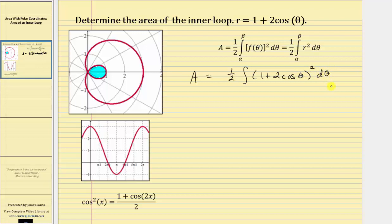Now let's work on determining the limits of integration that will trace out the inner loop. It's helpful to graph the polar equation on the rectangular coordinate system as shown here, where along the horizontal axis we have theta and along the vertical axis we have r. Notice at this point, r is three and theta is zero radians, which corresponds to this point on the polar curve. Then notice as theta increases, the radius decreases until the radius is zero and the angle theta is two thirds pi radians.